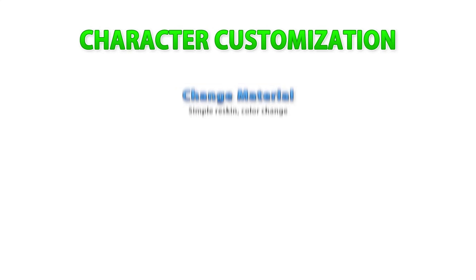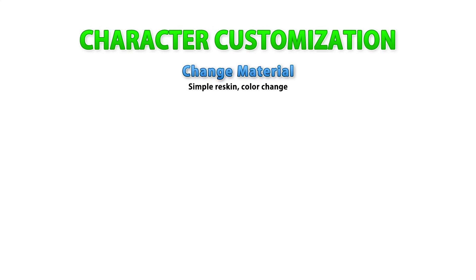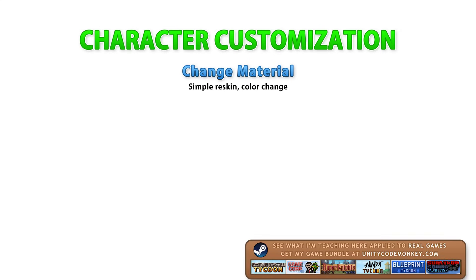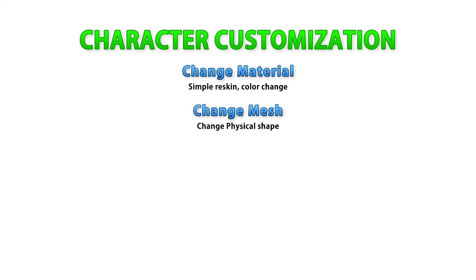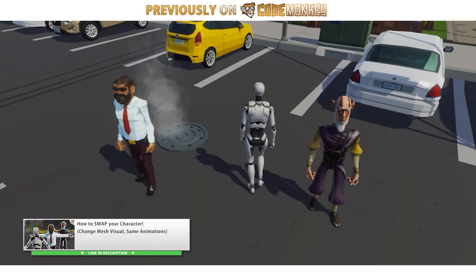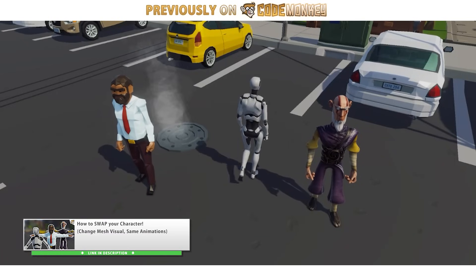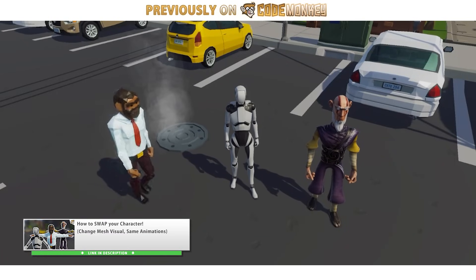So there are several ways to handle character customization. The simplest possible involves two methods. First, just change the material and texture — this works for a basic reskin, and a texture includes anything, so it doesn't have to be just literally changing the skin color. Depending on how your character is set up, you can change the color of the belt and armor, or whatever else uses the material you're swapping. The second simplest method is by changing the visual mesh, which will change the entire physical shape of the character. I actually covered just this method in detail in another video — how you can easily swap meshes while keeping the same animations.